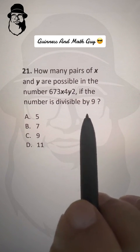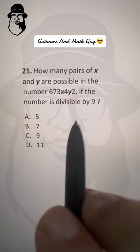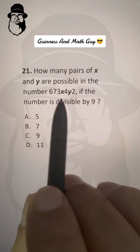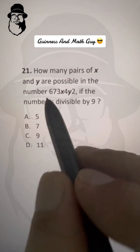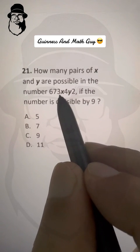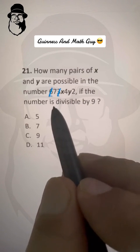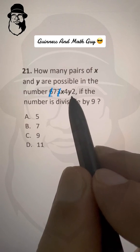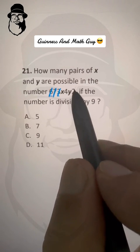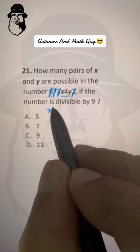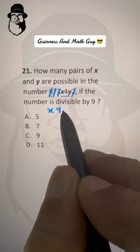Now divisibility by 9 is we just take the digits that add up to 9 and cross them first. 6 plus this 3, they add up to 9 so we cross them. Now this 7 and this 2, they add up to 9 so we cross them also. Now we are left with X, 4 and Y.